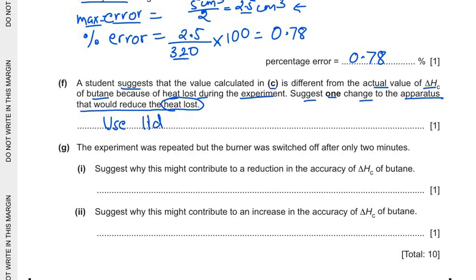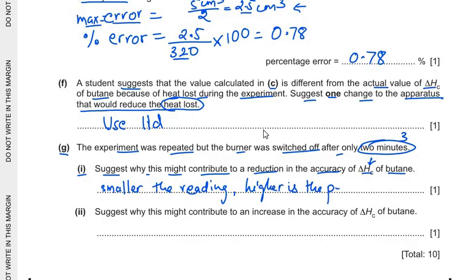Part G is the experiment was repeated but the burner was switched off after only 2 minutes. Earlier we had used 3 minutes. So what will happen if we use 2 minutes? The first sub question is suggest why this might contribute to a reduction in the accuracy of the enthalpy change of butane. The accuracy in the delta Hc, that is enthalpy change of combustion, will reduce. The reason being is that the smaller the reading, higher is the percentage error. Higher is the percentage error and that's why the accuracy might decrease.